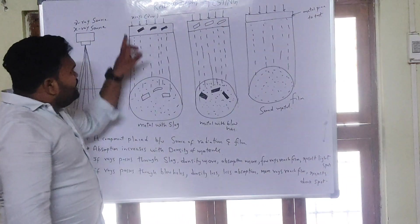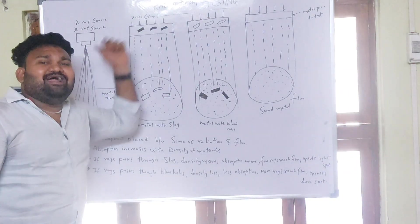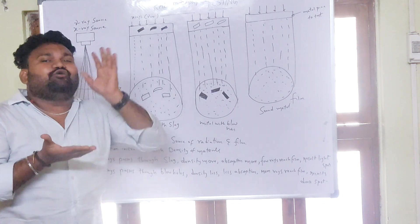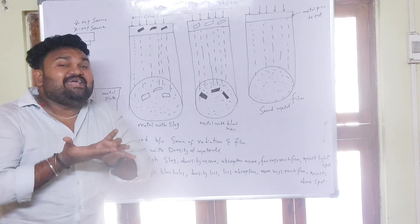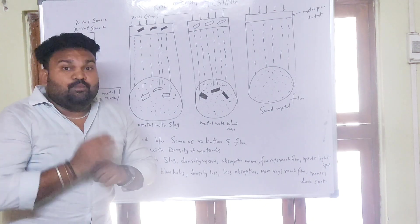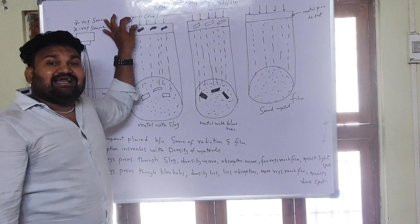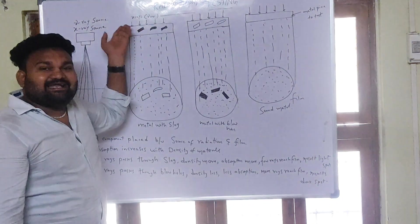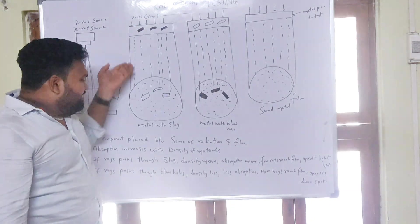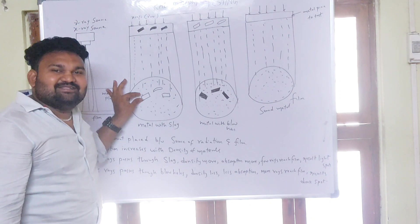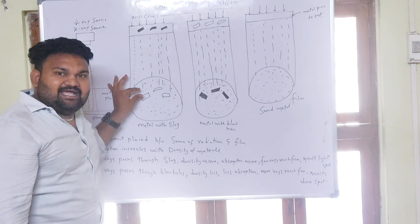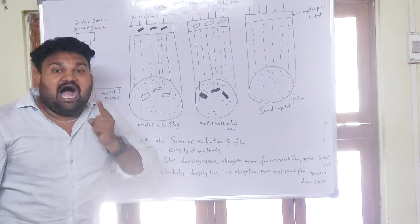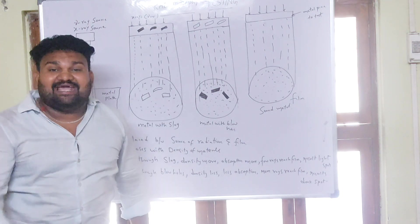In this workpiece there is slag — slag is extra material around the body. The slag increases the local density. More rays are absorbed where density is higher. When more rays are absorbed by the metal, fewer rays reach the film. If the light spots appear on the film, that indicates the presence of slag or other defects in the particular workpiece or metal.